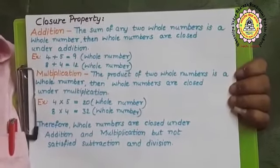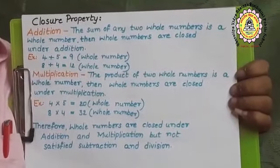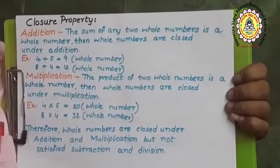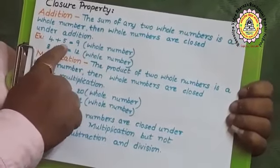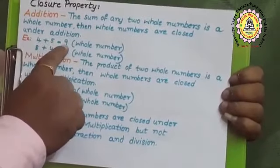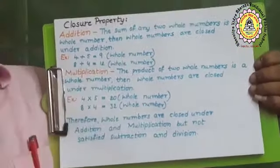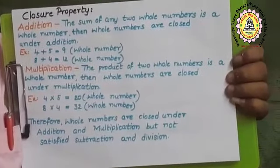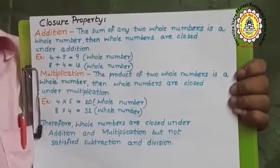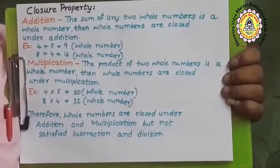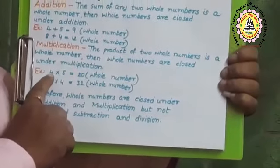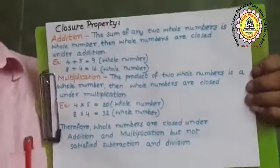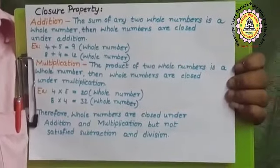Closure property of whole numbers: the sum of two whole numbers is a whole number, so whole numbers satisfy closure property under addition. For example, 4 plus 5 — both 4 and 5 are whole numbers and the result 9 is also a whole number. For multiplication, the product of two whole numbers is also a whole number. For example, 4 into 5 — both are whole numbers and the product 20 is also a whole number. So whole numbers satisfy closure property under addition and multiplication.